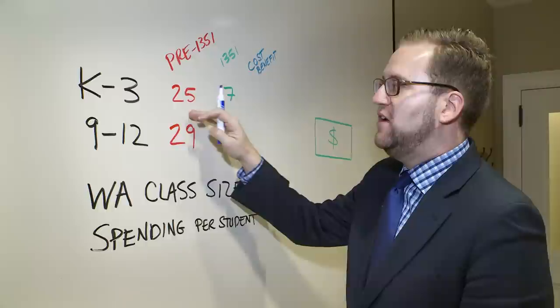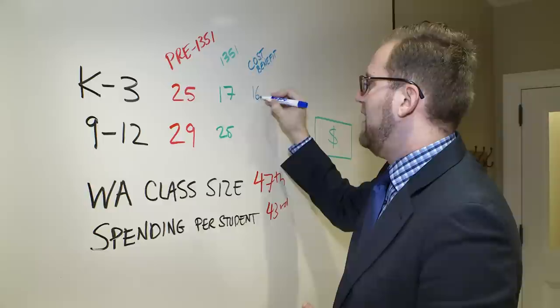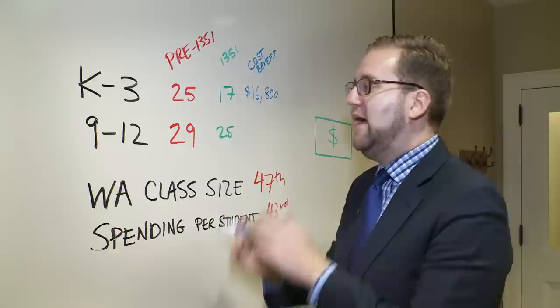In kindergarten classrooms, reducing our class sizes from 25 to 17 will generate a net benefit of $16,800 per classroom of benefit for taxpayers and for the students in those classrooms.